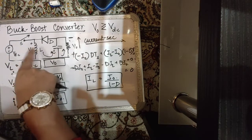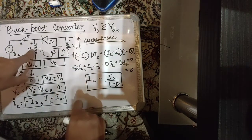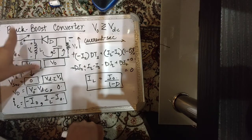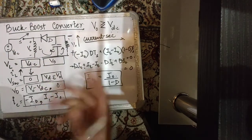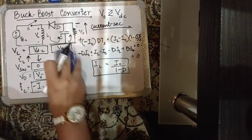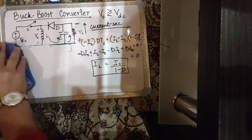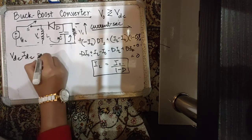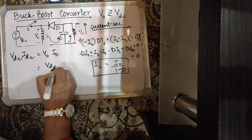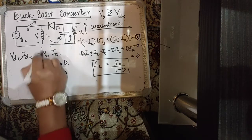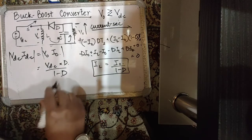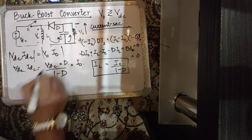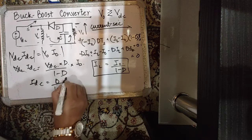The source current relationship is derived via input-output power balance. For an ideal converter, VDC · IDC = V0 · I0. Substituting V0 = D · VDC / (1 − D) (in magnitude) and simplifying: IDC = D / (1 − D) · I0. This makes sense: when stepping down voltage, input current is a stepped-down version of output current; when boosting voltage, input current is also boosted to maintain power balance.